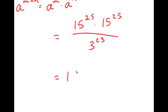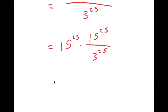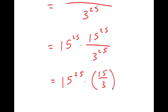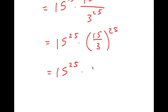Now this is equal to 15 to the power of 25 times 15 to the power of 25 over 3 to the power of 25, which is equal to 15 to the power of 25 times 15 over 3 to the power of 25. And this is equal to 15 to the power of 25 times 5 to the power of 25.